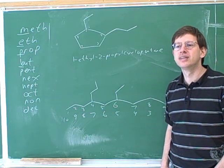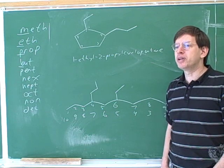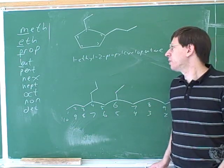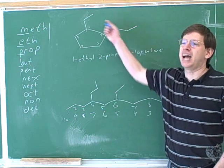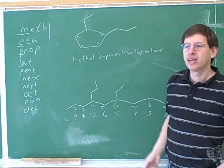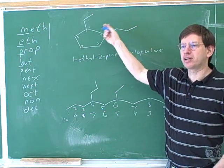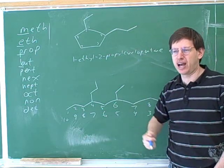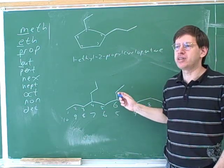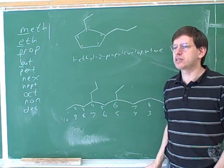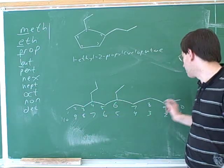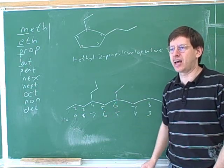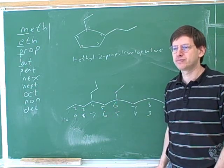So we don't even need alphabetical ordering. That's right. Remember, alphabetical ordering is only used if there's a tie between the different ways of numbering. Here there was a tie between numbering clockwise or counterclockwise, so we had to use alphabetical ordering to decide how to number. But here there is no tie. Numbering from the left gives you the smallest number of four, and numbering from the right gives you the smallest number of six.